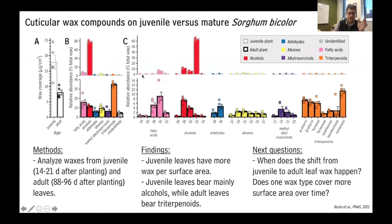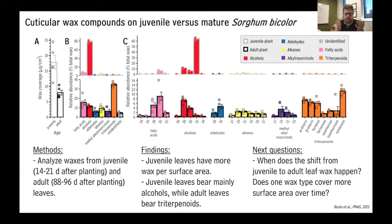We have detailed information about exactly which alcohols and which triterpenoids were found — I refer you to the paper for that. The important point is that there is a shift from leaves made by plants in the juvenile stage, which have one wax phenotype, to after the transition, when the plant produces leaves with a different wax phenotype. We wanted to know when this shift happens, and in particular, does one wax type — the aliphatic alcohol type or the allicyclic triterpenoid type — cover more surface area of the plant over time?